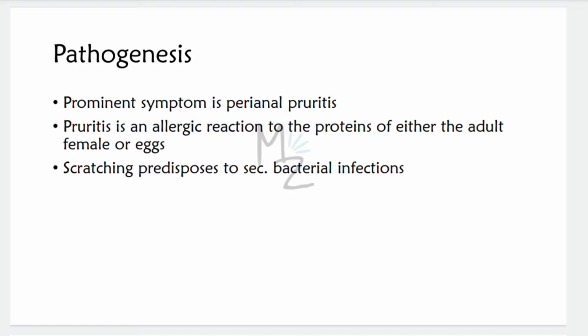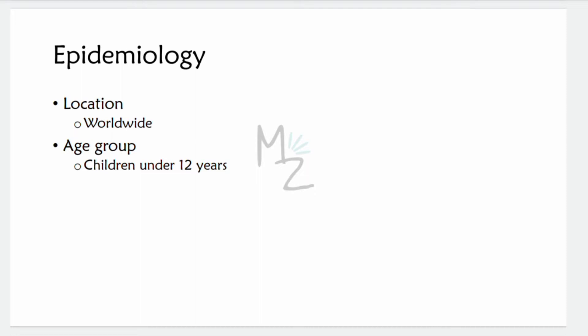Pathogenesis: perianal pruritus is the most prominent symptom. Pruritus is thought to be an allergic reaction to the proteins of either the adult female or the eggs. Pruritus is a skin condition with itchy skin that irritates the patient, predisposing them to scratch the area, which in turn predisposes to secondary bacterial infections, also called superinfections. Epidemiology: enterobiasis is found worldwide and is the most common helminth in the United States. Children younger than 12 years of age are the most commonly affected group.